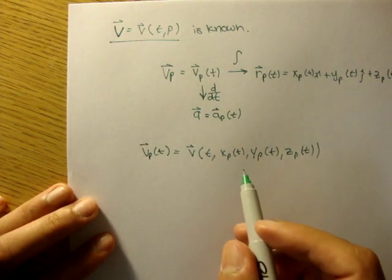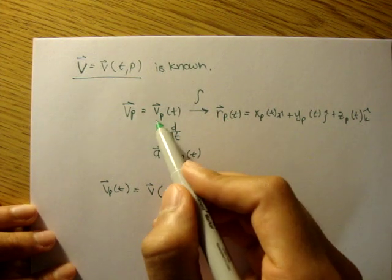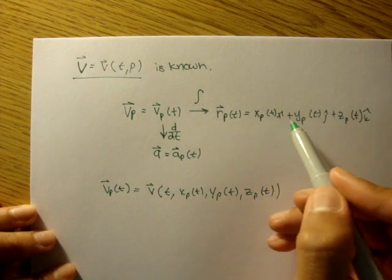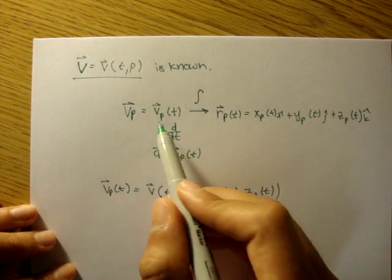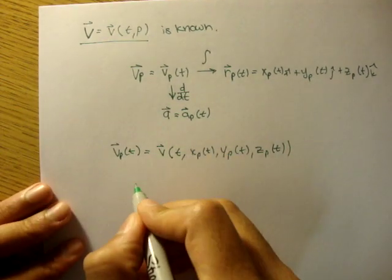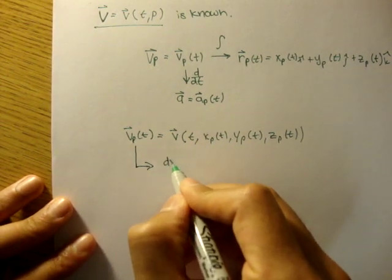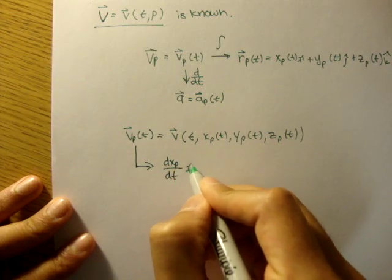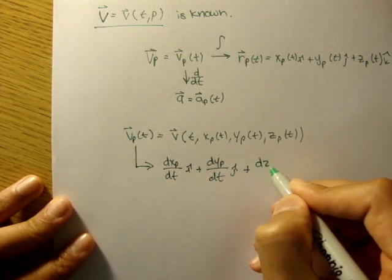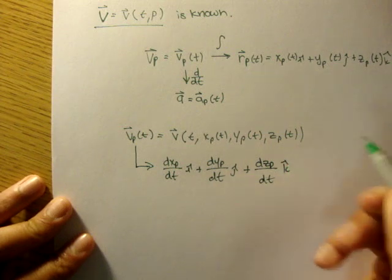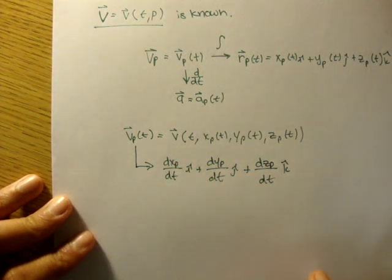Now, we just said that we can integrate velocity to find position. So in order to find velocity from a position function, we can derive each of these terms. We can derive the x term, we can derive the y term, and we can derive the z term to give us our velocity field.